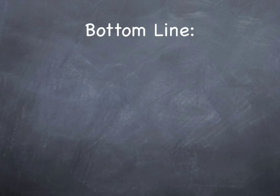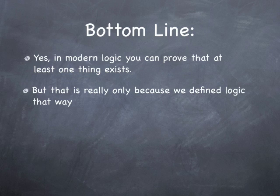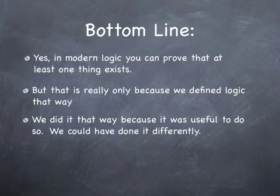So here's the bottom line. Yes, in modern logic you can prove that at least one thing exists. But really, it's only because we define logic that way. And point of fact, other people have defined other kinds of logics where this isn't true. We did it that way just because we thought it was useful to do so. We could have done things differently.